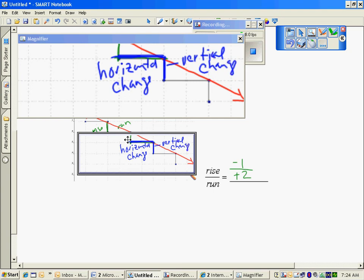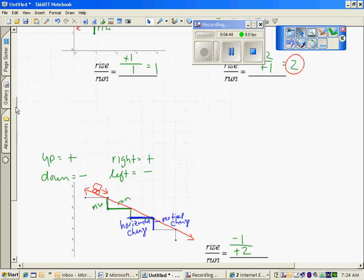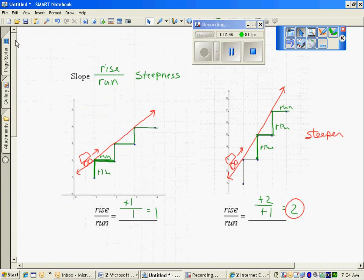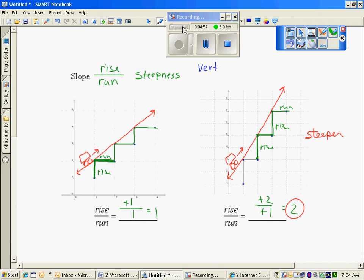So it's called the vertical change and the horizontal change. Back in our definition of slope, not only are we going to call it the steepness, rise over run, we're going to get a little bit more formal and call it the rise or the vertical change divided by the horizontal change.